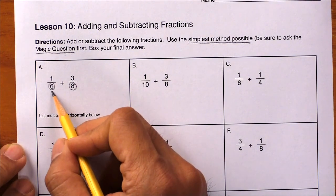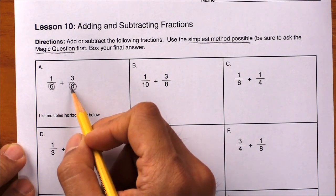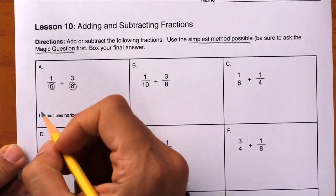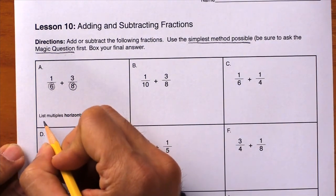Don't list the multiples of six and the multiples of eight. Just list the multiples of the larger number, which is the eight. So right underneath here, I'll start counting by eight, one at a time.